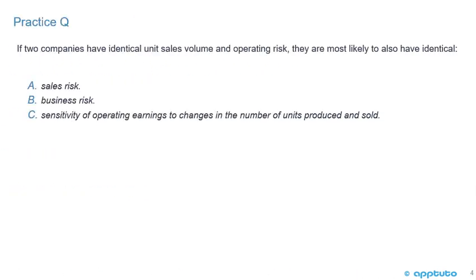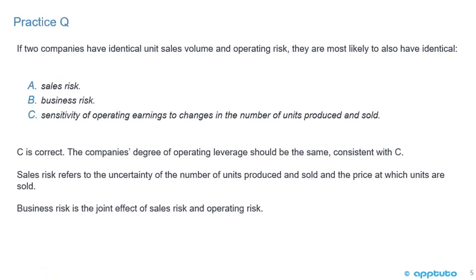A quick practice question: if two companies have identical unit sales volume and operating risk, they are most likely to also have identical: A) sales risk, B) business risk, or C) sensitivity of operating earnings to changes in the number of units produced and sold. C is correct — the degree of operating leverage should be the same, consistent with C. Sales risk refers to uncertainty in the number of units sold and price. Business risk is the joint effect of sales risk and operating risk.